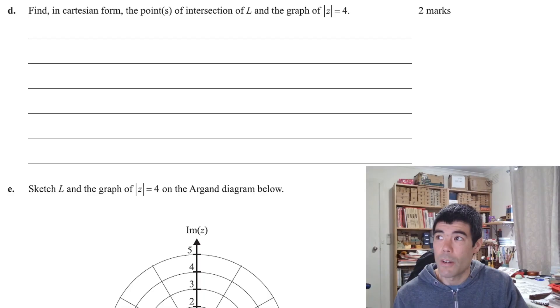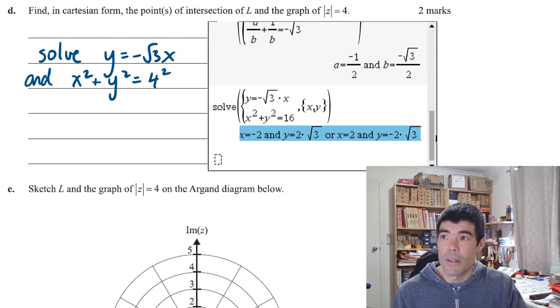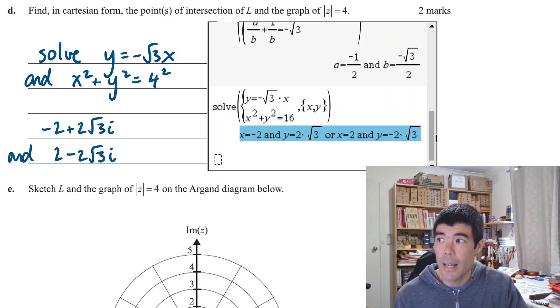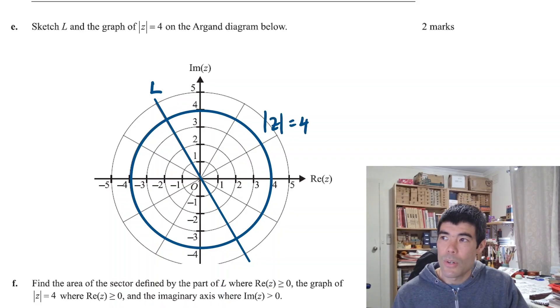Part d is actually much more straightforward. We just want to find the point of intersection with L which was y = -√3x and the line |z| = 4 is just a circle x² + y² = 4². We can solve that on the calculator and we'll get the coordinates. We can either state them in coordinate form or in the form -2 + 2√3i, 2 - 2√3i. Then again, this is all very typical. We want to sketch this on an Argand diagram. So make sure you use a ruler for your straight line and then circle just do your best. We should also label if we have two graphs. So one is L, the other one is |z| = 4.